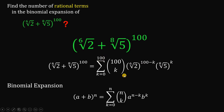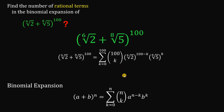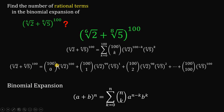If we expand the right-hand side, it looks like this: 100-choose-0 times (⁶√2)^100, plus 100-choose-1 times (⁶√2)^99 times (⁸√5)^1, plus 100-choose-2 times (⁶√2)^98 times (⁸√5)^2, all the way up to 100-choose-100 times (⁸√5)^100.